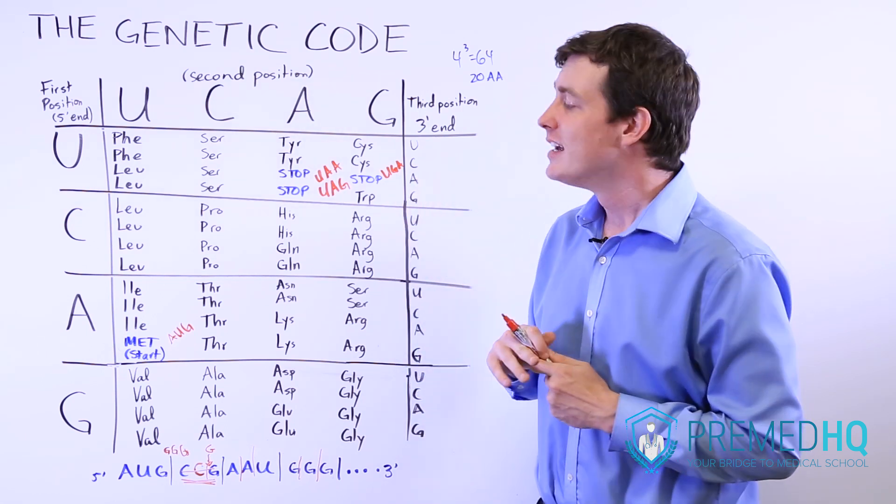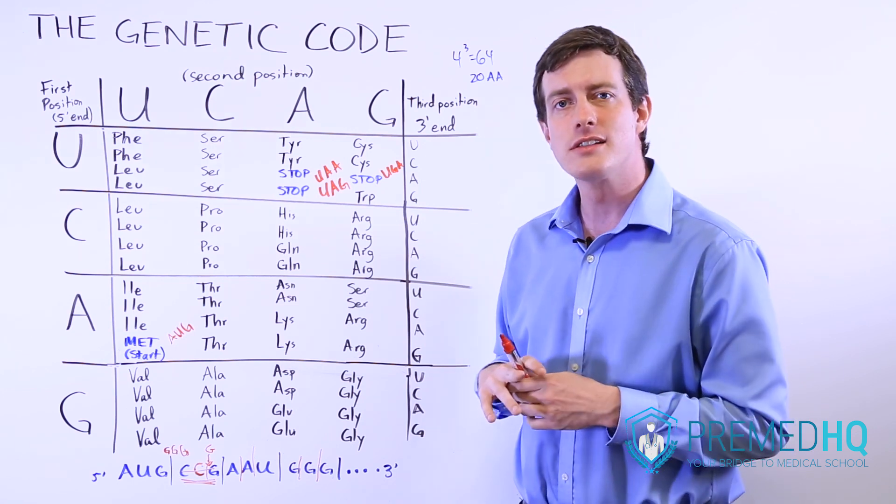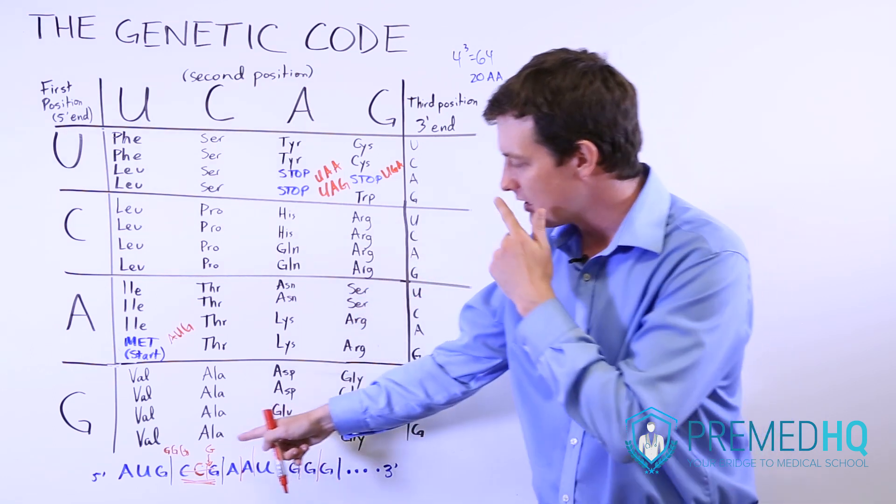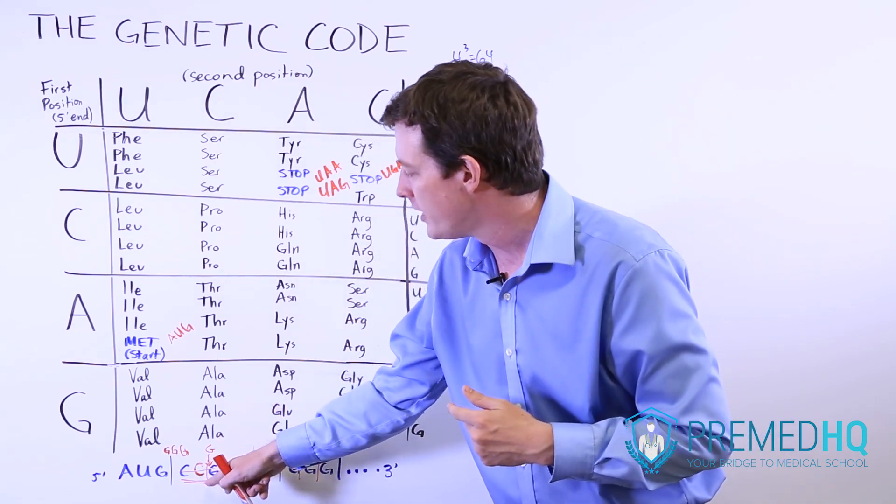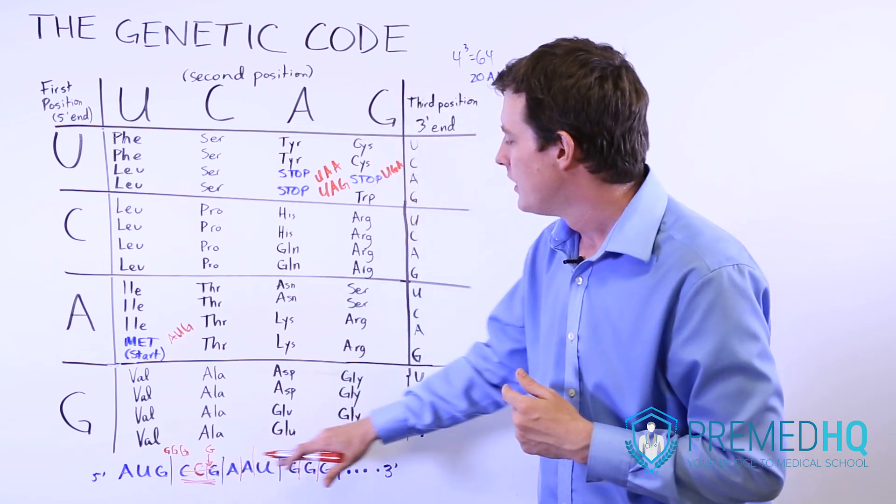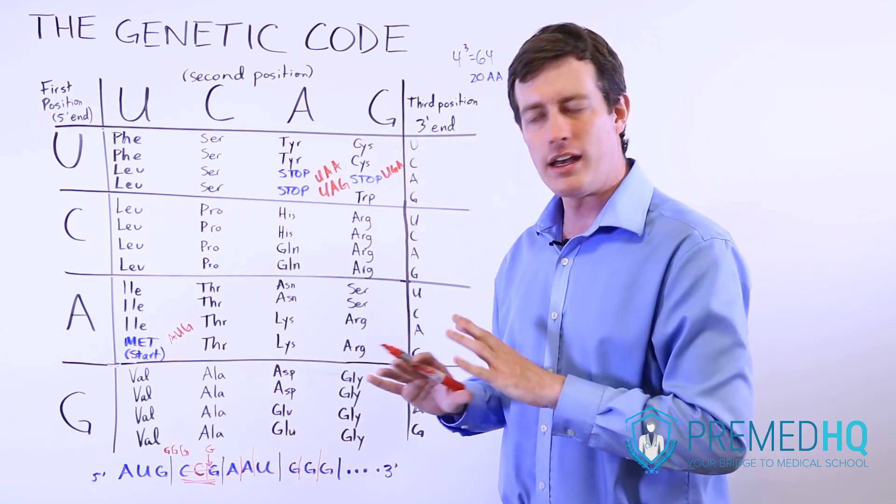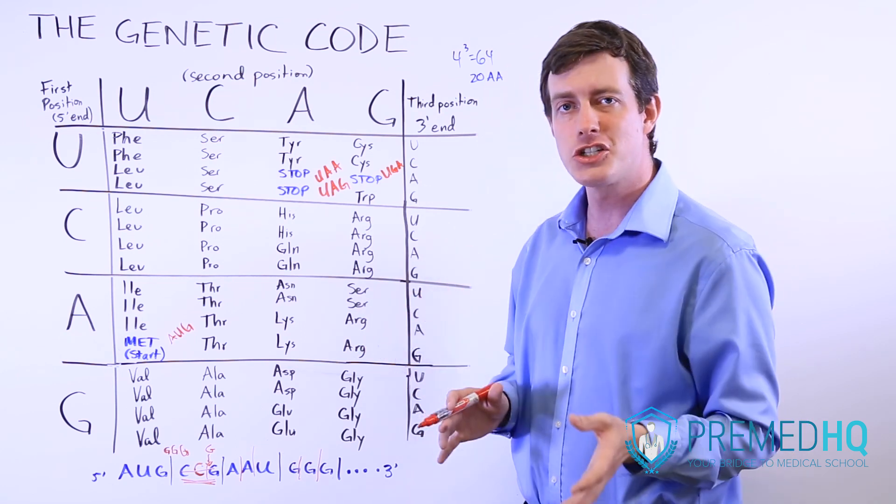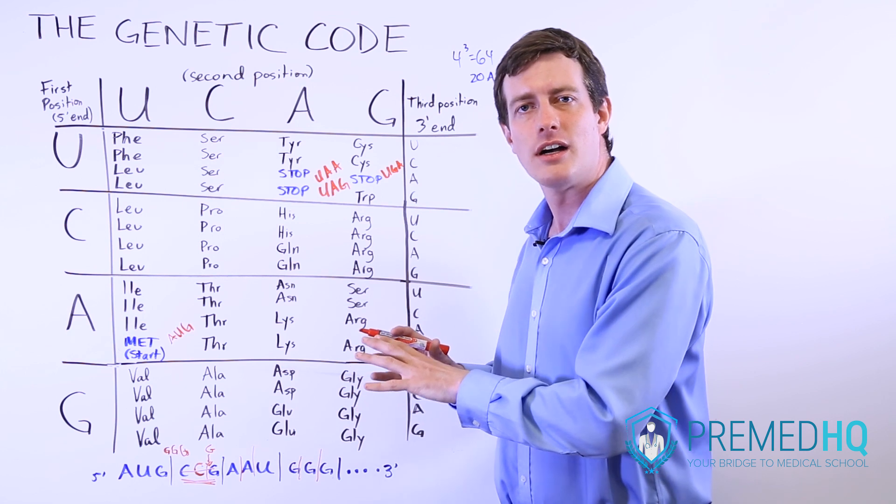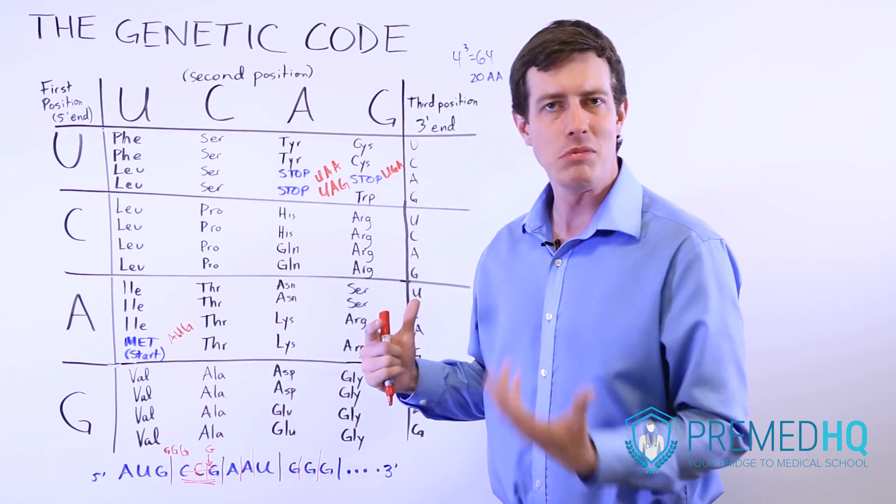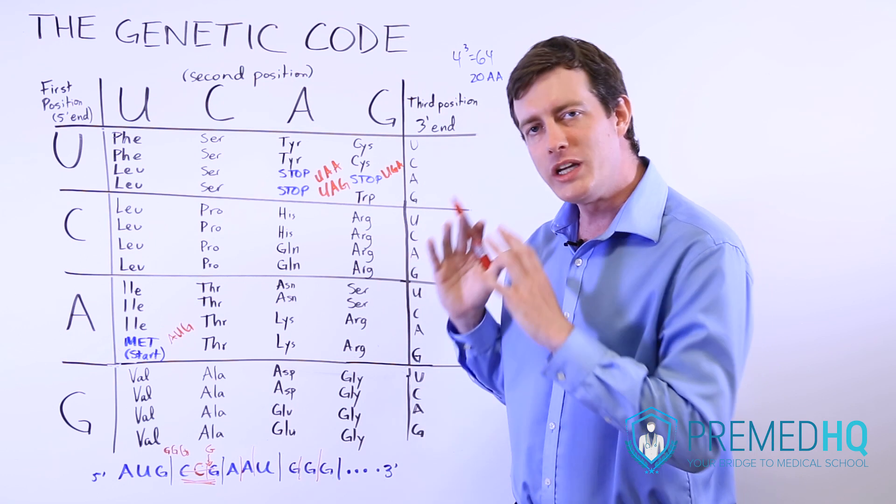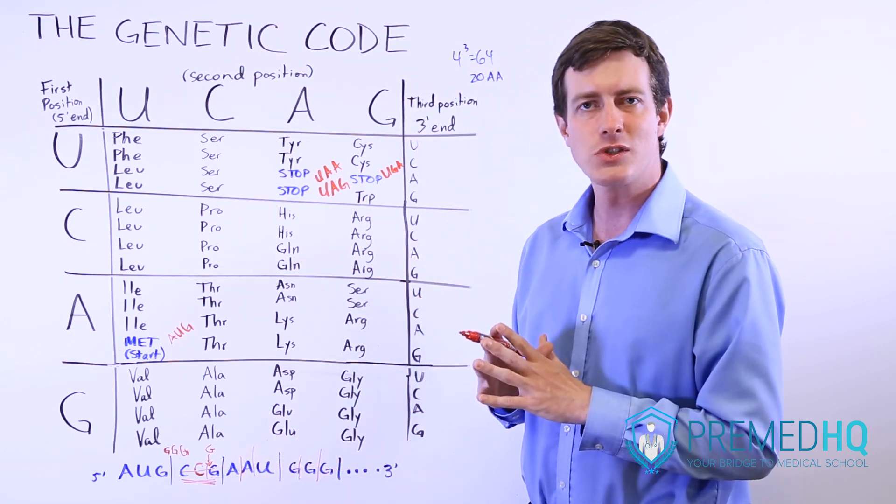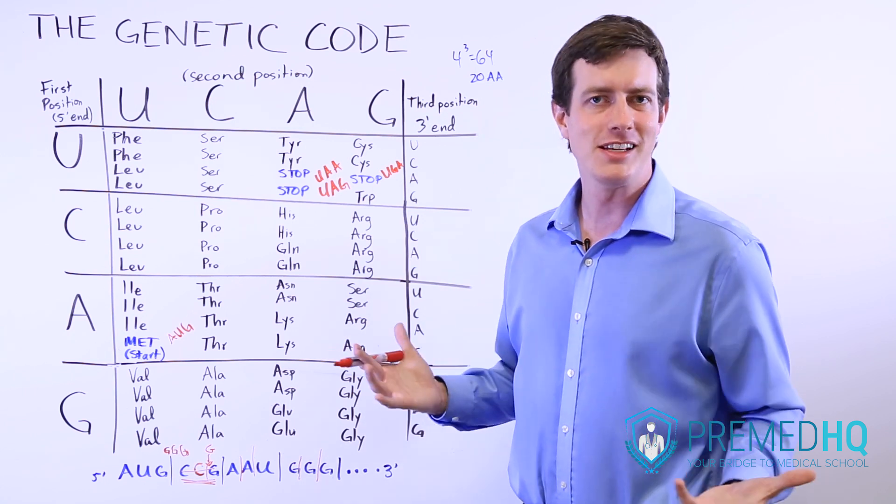So frameshift mutations tend to be quite deleterious. They tend to be something that results in significant alterations of the protein, because if you add one item here or you remove one item here, that is going to shift the entire reading frame down and it will totally alter the nature of your amino acids. However, if it's an addition or subtraction of something in a factor of three or maybe six or something like that, the reading frame is going to be the same. And these codons will remain intact and result in the desired amino acid sequence.